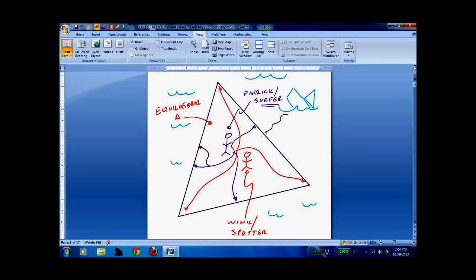When Patrick walks, he will walk at a 90-degree angle straight to the beach. And when Wink walks, she will walk straight from wherever she is to the tips of the island.